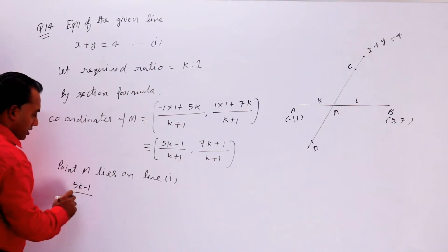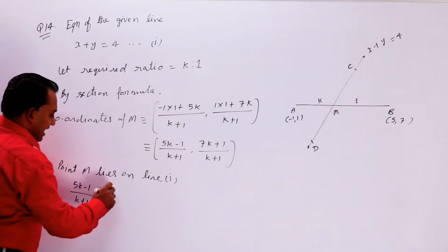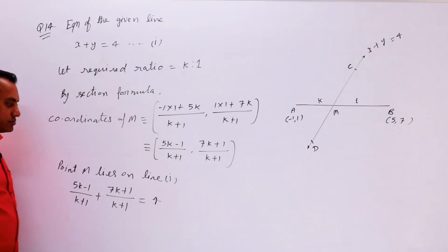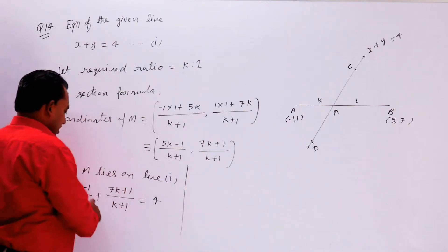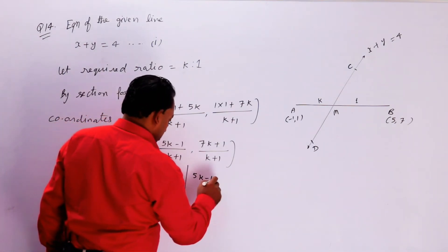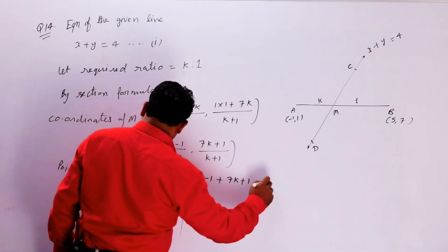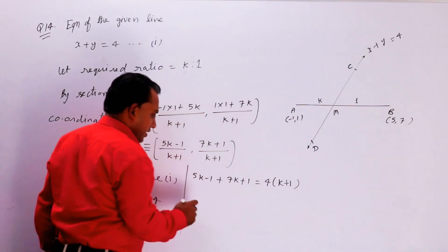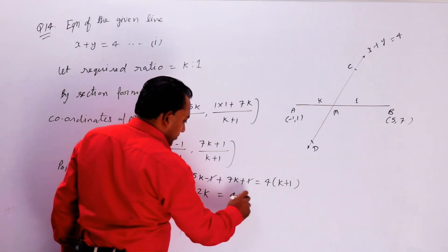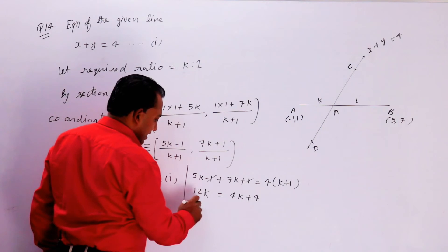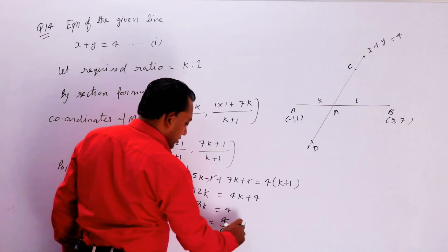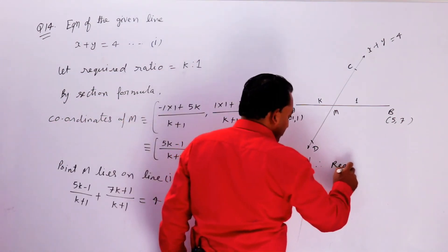Now solve: (5k - 1)/(k + 1) + (7k + 1)/(k + 1) = 4. This gives 12k/(k + 1) = 4(k + 1). So 12k = 4k + 4, which means 8k = 4, therefore k = 4/8 = 1/2.